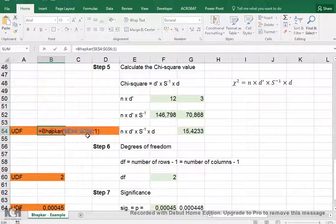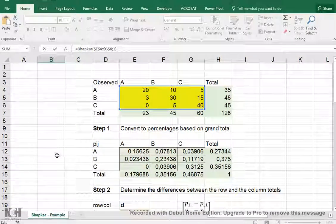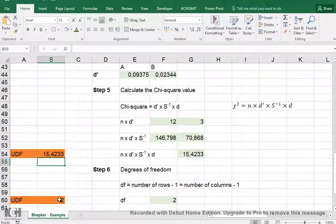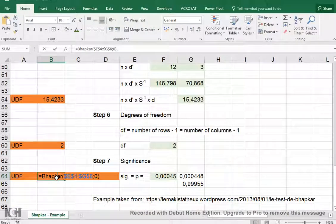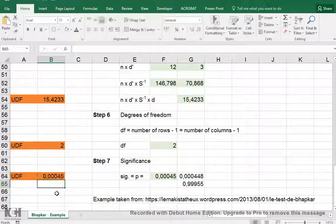And then you can simply just select the original data excluding the totals, select a one if you want to see the chi-square value, select a two if you want to see the degrees of freedom, and anything else, for example zero or three, will return the significance. All right, that was it.